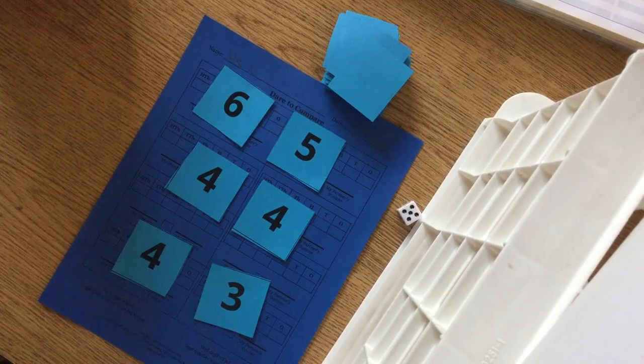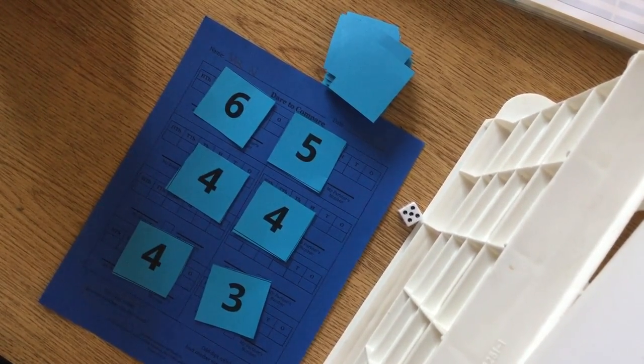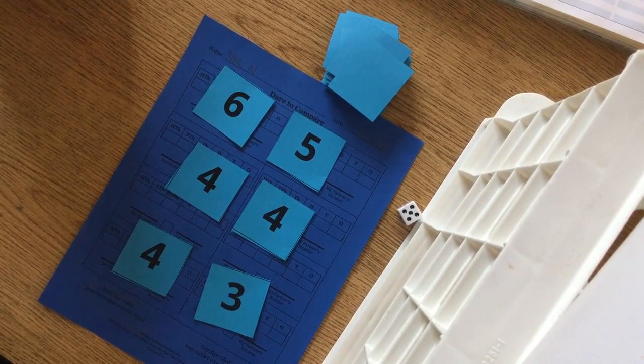So, what you're going to do is secretly, you are going to write a number, a six-digit number using these six digits. And your partner is also going to do that.